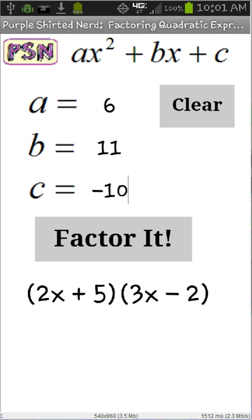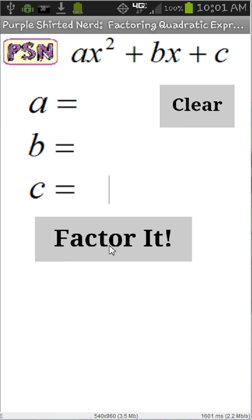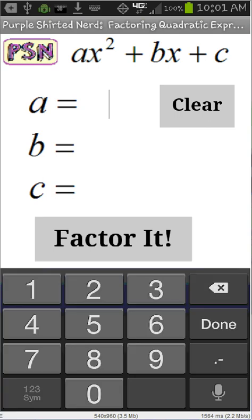Again, reminder, on the factor it button, when I hit that, that will turn blue just to assure you that it's actually doing something. So let's go with one with a little more processing time. 24x squared. Let's go minus 39x. And let's go minus 18.